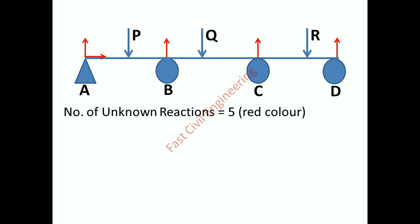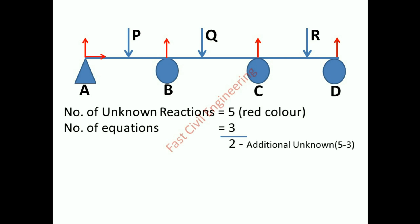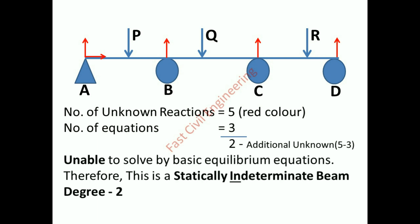Number of unknown reactions equals five, indicated in red color. Number of equations equals three. Five minus three equals two — two additional unknowns. Unable to solve by basic equilibrium equations; therefore, this is a statically indeterminate beam, degree two.